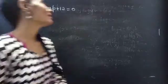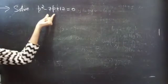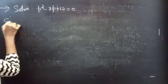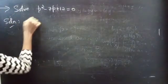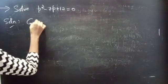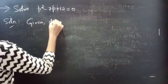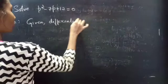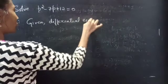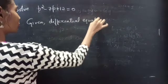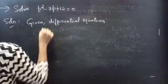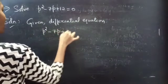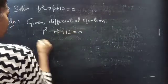Problem: Solve P squared minus 7P plus 12 equals to 0. Solution. Differential equation: Solve P squared minus 7P plus 12 equals to 0.